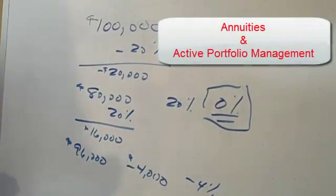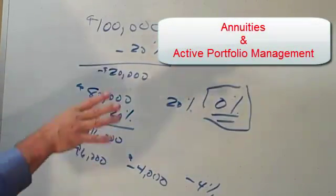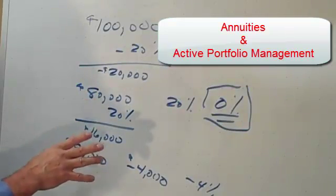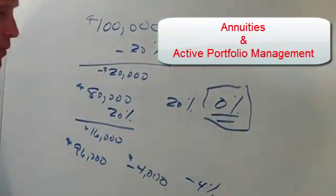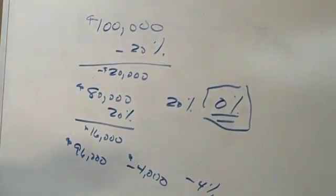And we do that through two means here at Dubas Capital Management. One is by taking advantage of annuities, and then secondly is through active portfolio management. So let's go back now and talk a little bit more about annuities and how they protect your portfolio.